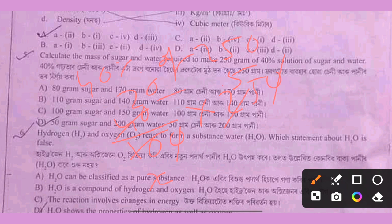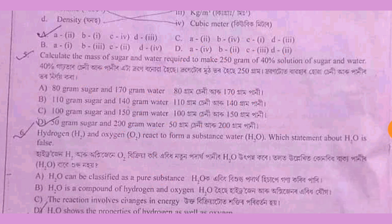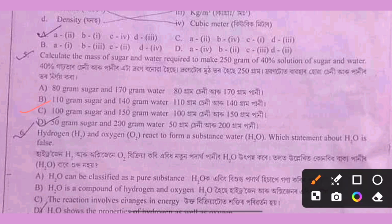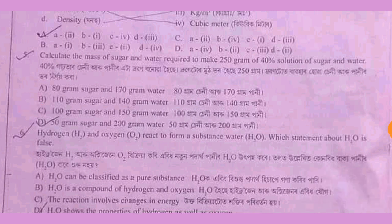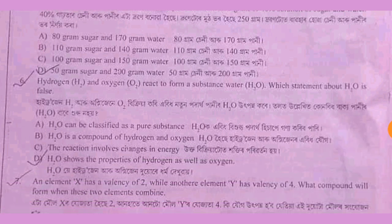So the sugar is 100 grams, and we can see that the water is 250 minus 100 equals 150 grams of water, and 100 grams of sugar.